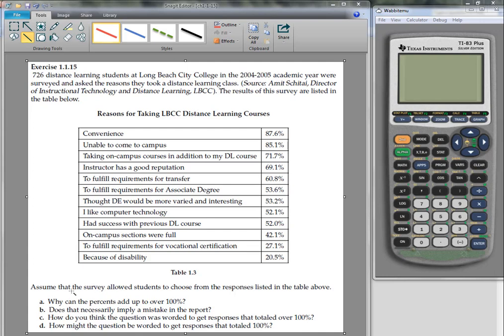And then it says below the table that assume that the survey allowed students to choose from the responses listed above. So they could choose more than one of these.